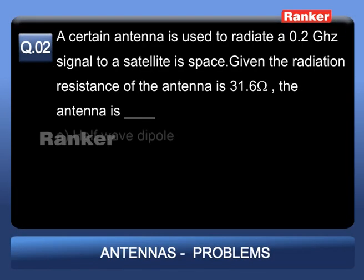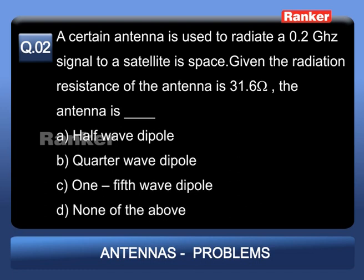Problem 2: A certain antenna is used to radiate a 0.2 GHz signal to a satellite in space. Given the radiation resistance of the antenna is 31.6 ohms, the antenna is: Option A: half-wave dipole; Option B: quarter-wave dipole; Option C: one-fifth wave dipole; Option D: none of the above.